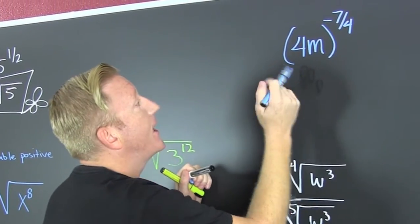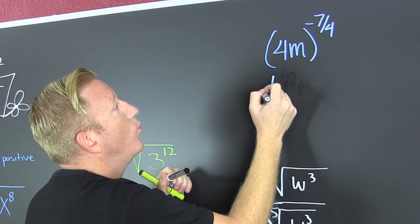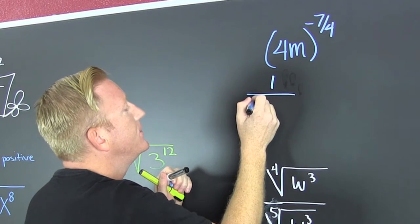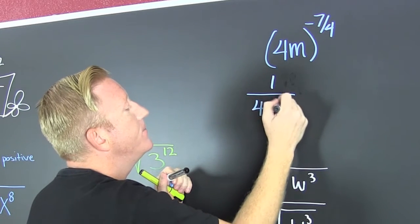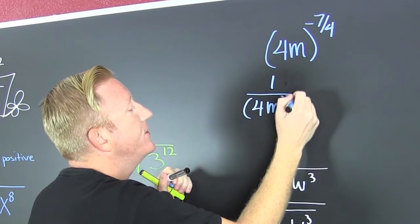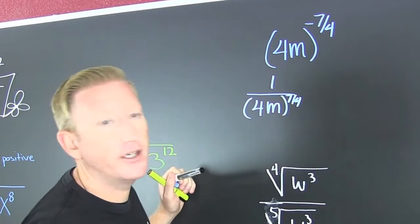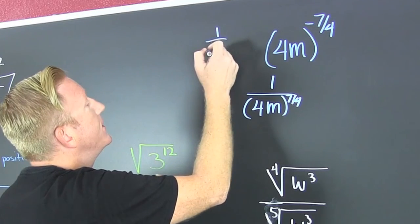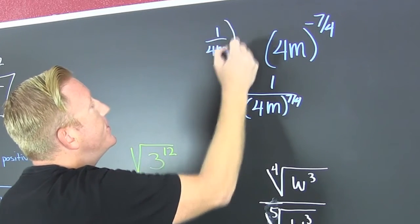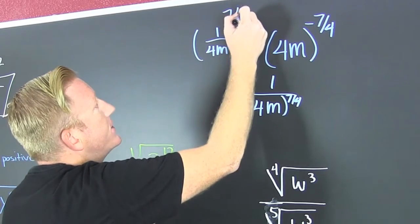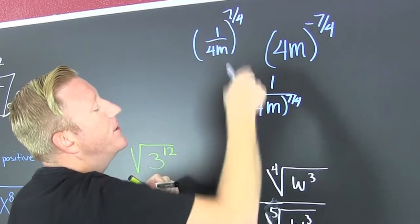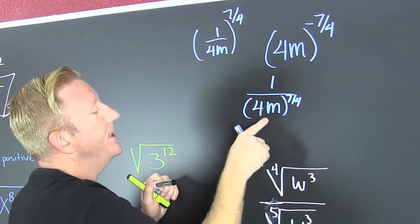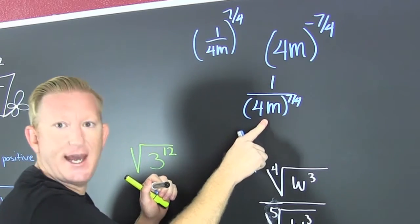On to the next one — we can see that's going to be 1 over 4m to the 7 fourths. I could have equivalently written it as 1 over 4m to the 7 fourths, because that negative exponent is going to give you the reciprocal.